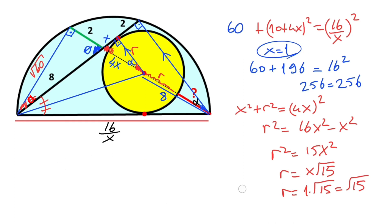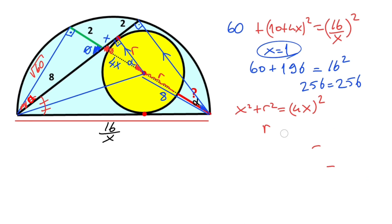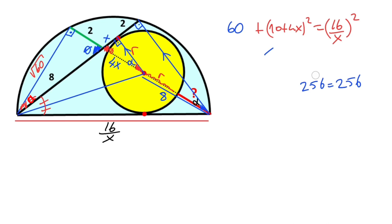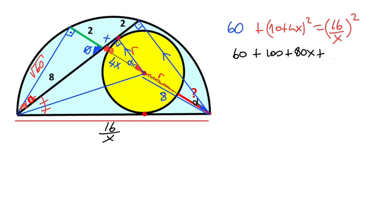You found the value of X by trying. But if you don't want to try, then the full algebraic road is available. Let's find all the roots of the equation: 60 plus 100 plus 80X plus 16X squared equals 256 over X squared.